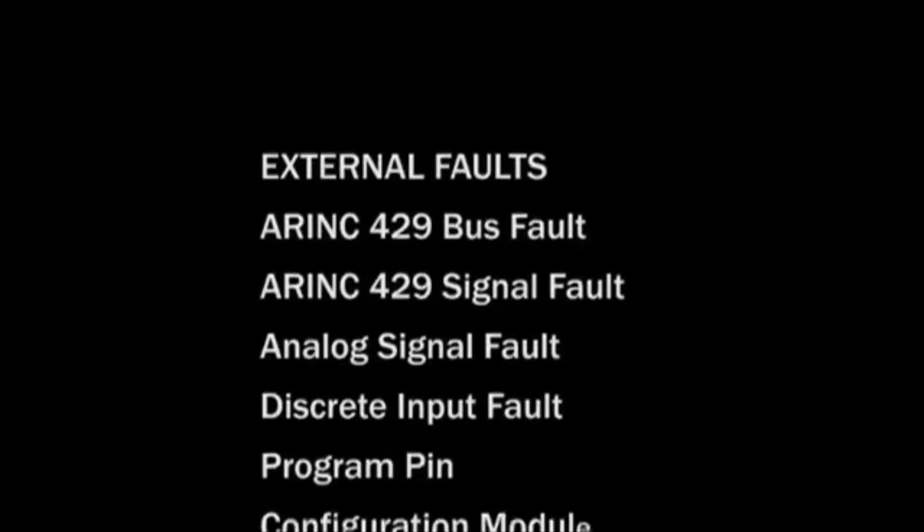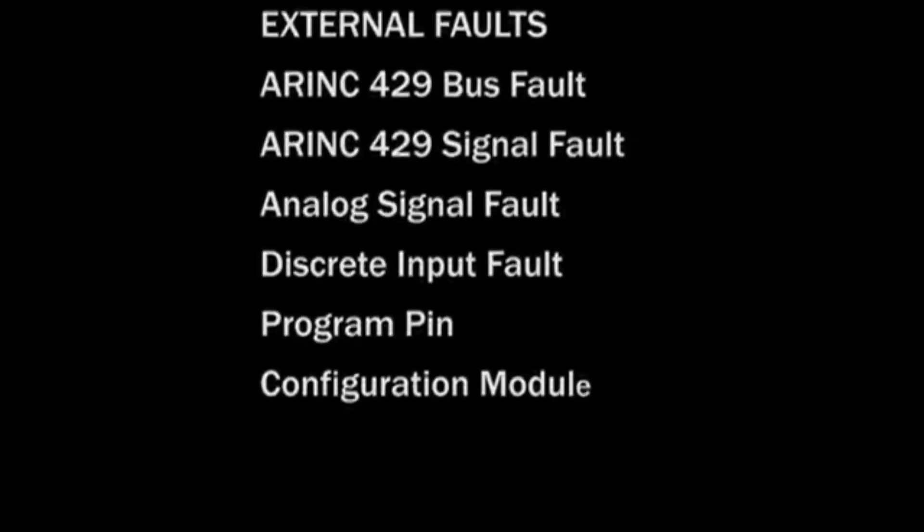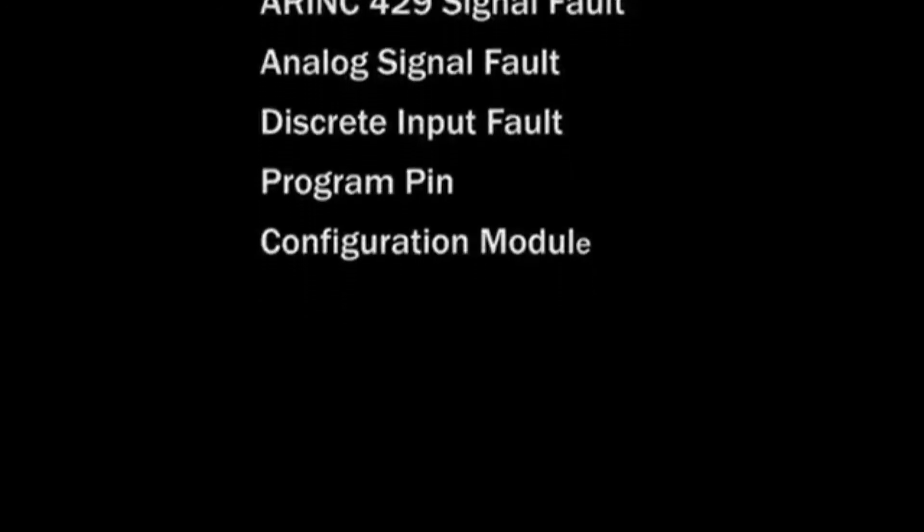External faults indicate a problem with a system providing input to the eGPWS. This could be an ARINC 429 bus, a signal fault, an analog signal fault, or a discrete input fault. It could even be a problem with the program pinning or the configuration module. Refer to the Line Maintenance Manual or the troubleshooting card for a list of all possible faults and the required corrective action.